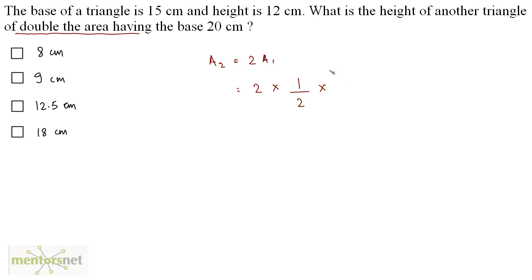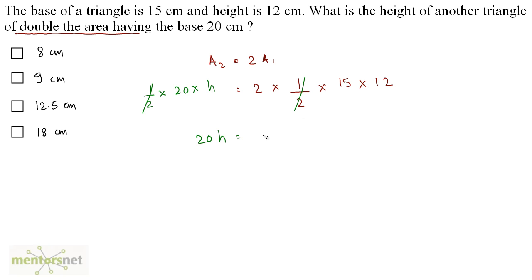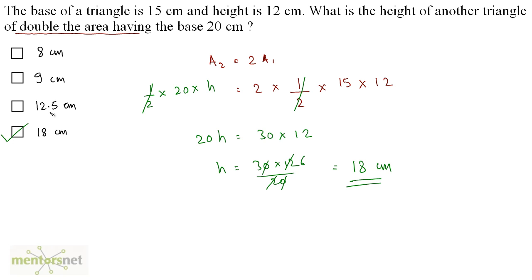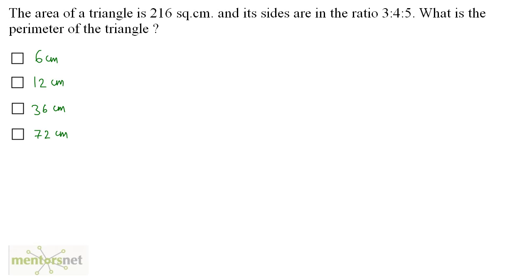So: twice of half times base times height = half times 20 times h. The base is 15 and height is 12 on the right side. The halves cancel out, giving 20h equals 15 times 2 times 12, so 20h equals 360. Therefore h equals 360 divided by 20, which is 18 centimeters. The answer is option D.